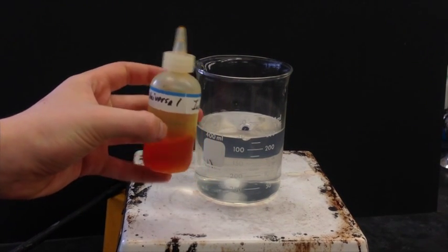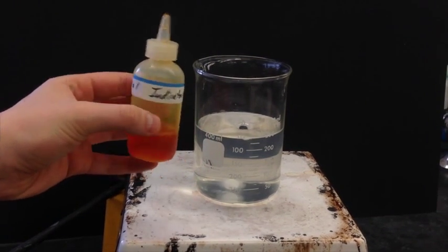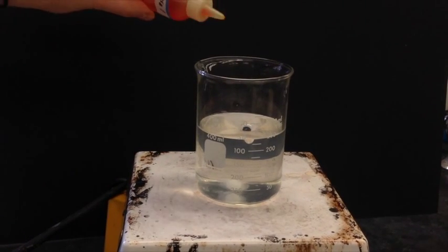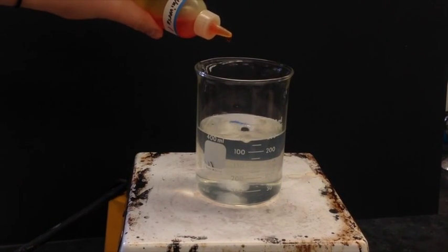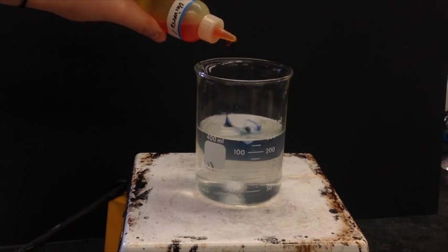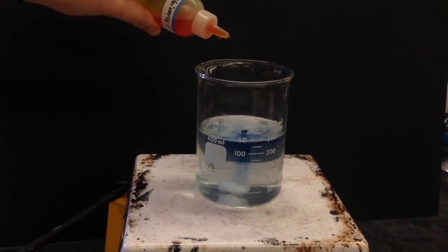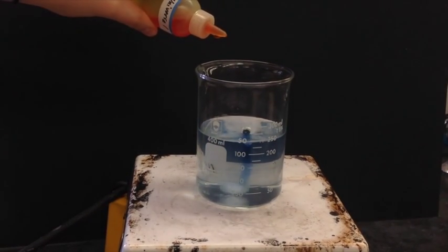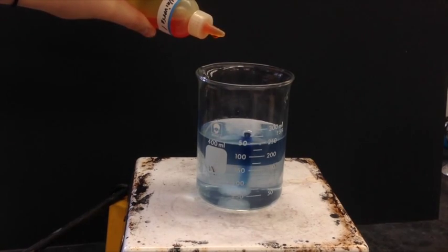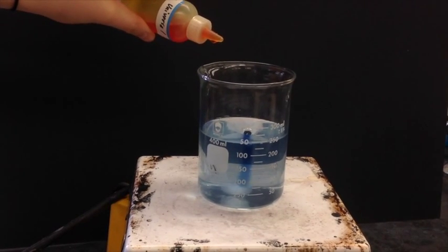In this demo, I'm going to add several drops of universal indicator to the casein solution to help us determine the effect of pH on protein solubility by adding HCl, an acid, and NaOH, a base. As we're adding the indicator, you can see that the solution is turning blue, so you know we're starting out with a basic solution.